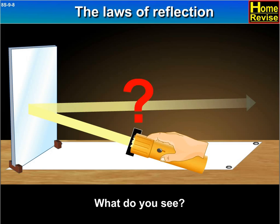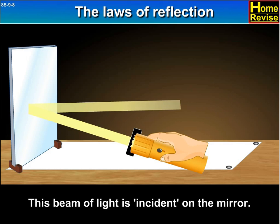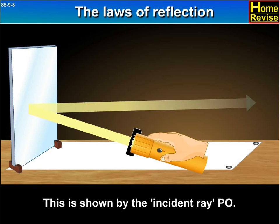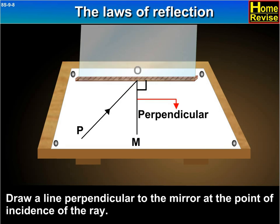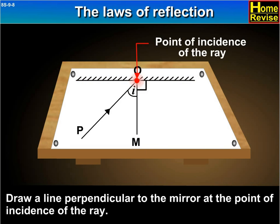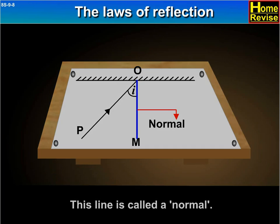What do you see? A beam of light from the slit in the paper falls on the mirror at an angle. This beam of light is incident on the mirror, shown by the incident ray PO. Draw a line perpendicular to the mirror at the point of incidence of the ray. This line is called a normal.